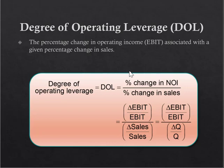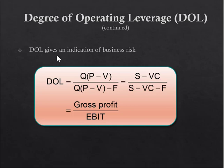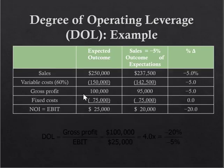The degree of operating leverage is the percentage change in operating income associated with a given percentage change in sales. As sales go up or down, operating leverage tells you how much net operating income changes per percent change in sales. The formula is: change in EBIT over EBIT, divided by change in sales over sales. The degree of operating leverage is an indication of your business risk.